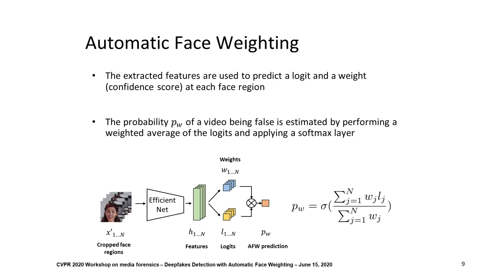The extracted features are used to predict a logit and a weight or confidence score for each face region within every input frame. Then, the probability of a video being fake is estimated by performing a weighted average of the logits and then applying a softmax layer. This allows us to obtain a prediction on a video level by using features from multiple face regions and multiple frames.